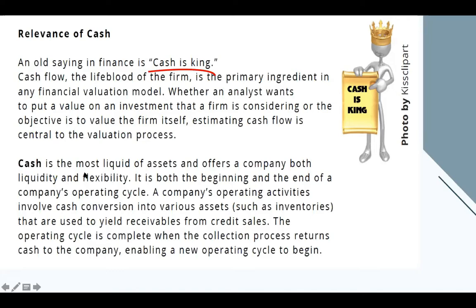Cash is the most liquid of assets. That's why it is categorized under current assets and is the very first item under current assets. Cash offers a company both liquidity and flexibility. A company with enough liquidity can take advantage of business opportunities, reinvest in another business, purchase resources or raw materials from its suppliers, take advantage of cash payments and discounts, pay its employees on time, pay its bills like electricity and rent.